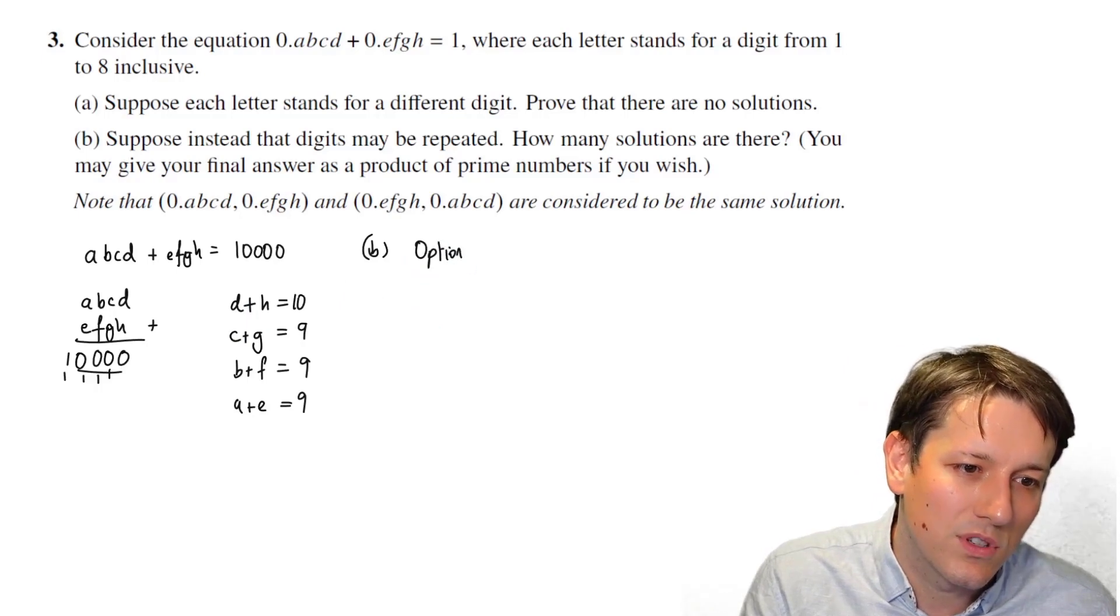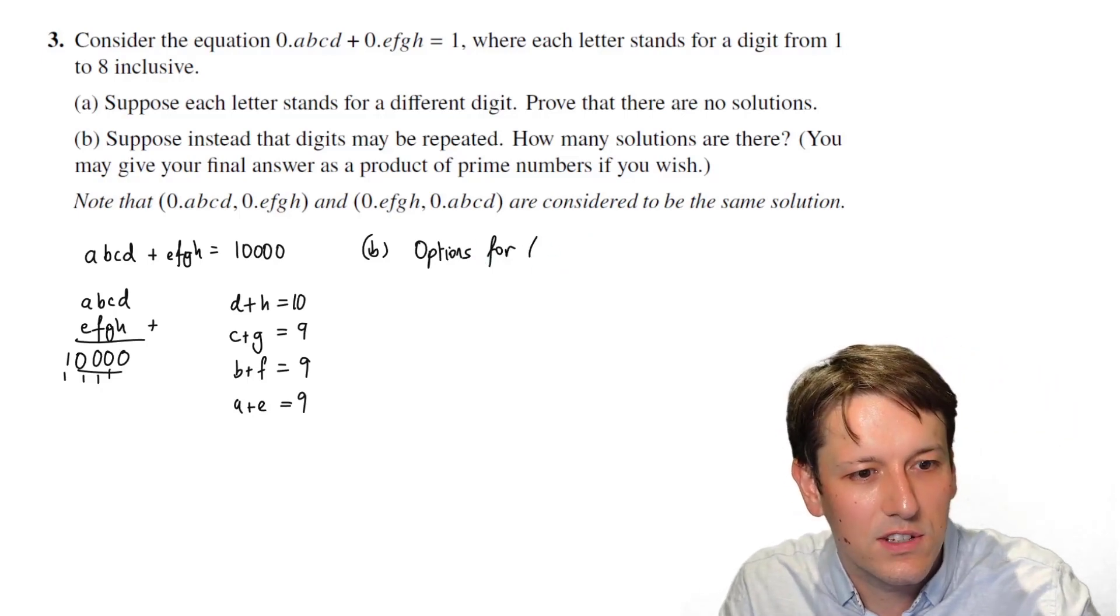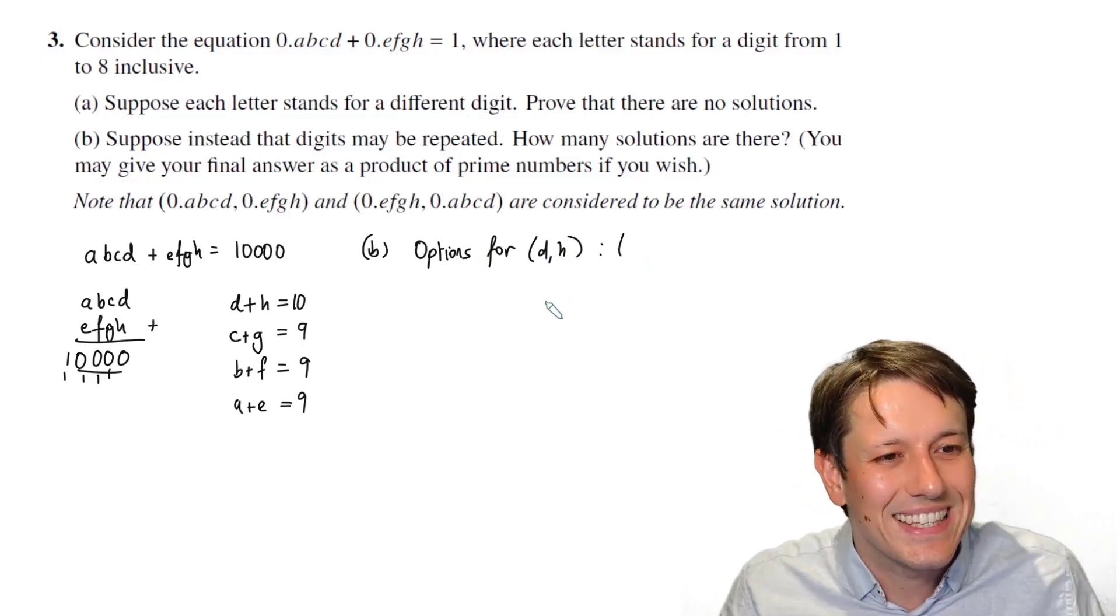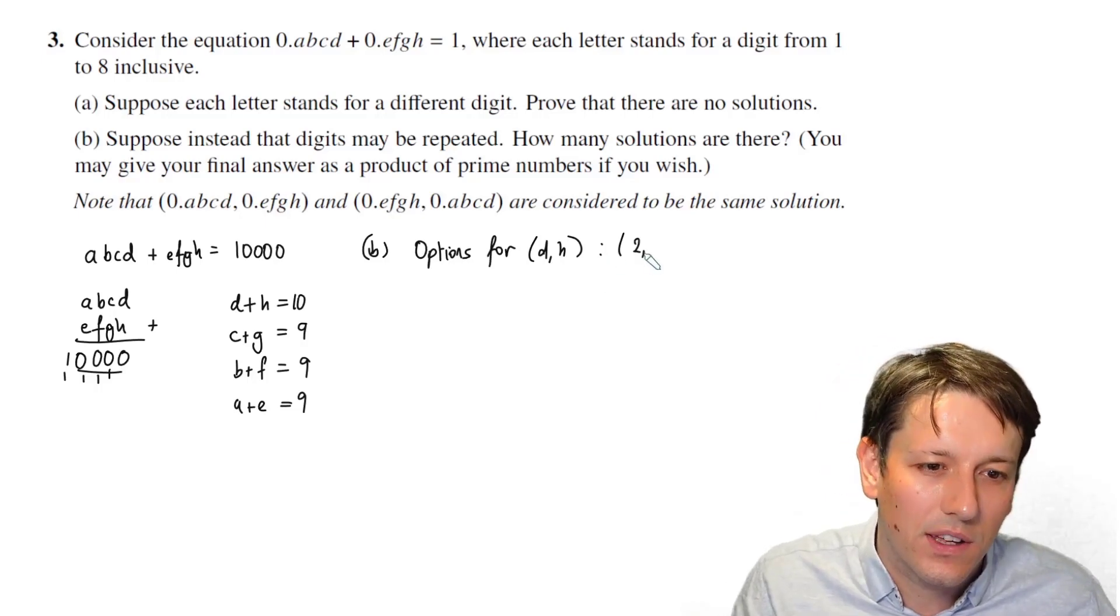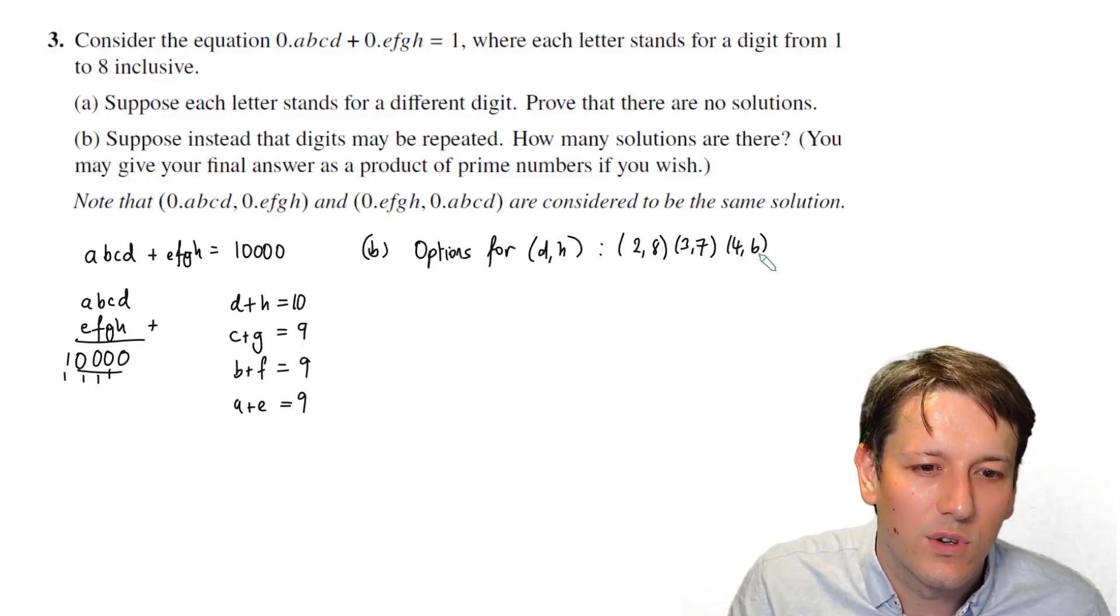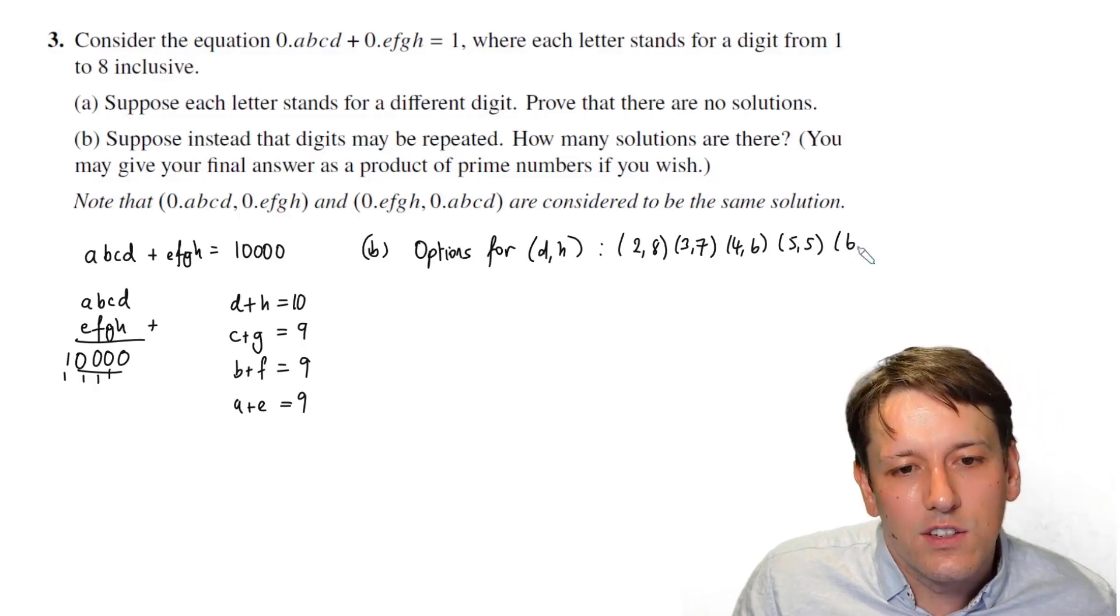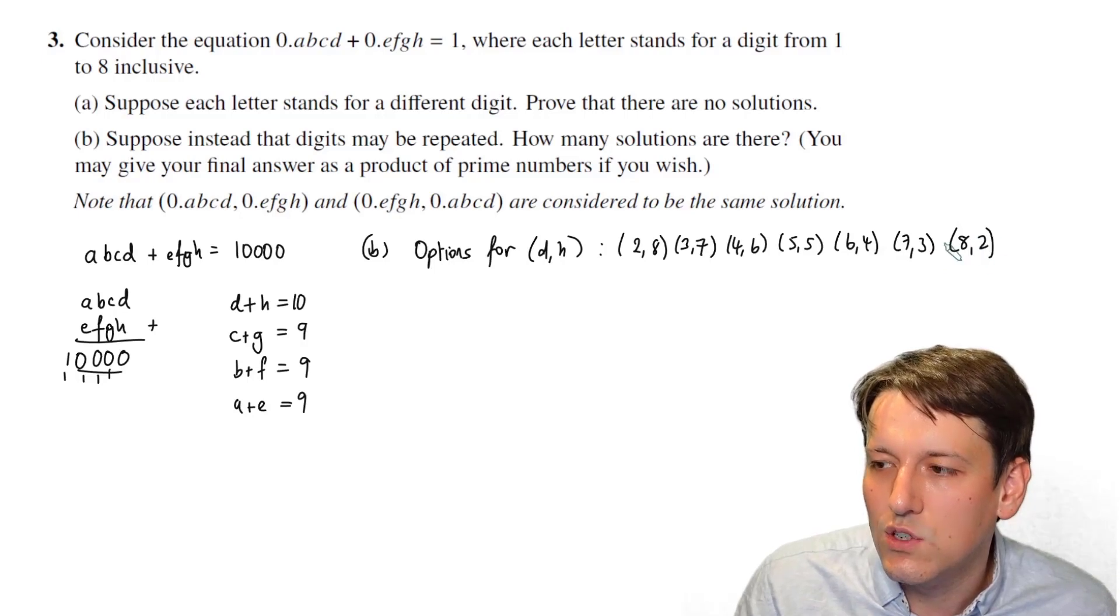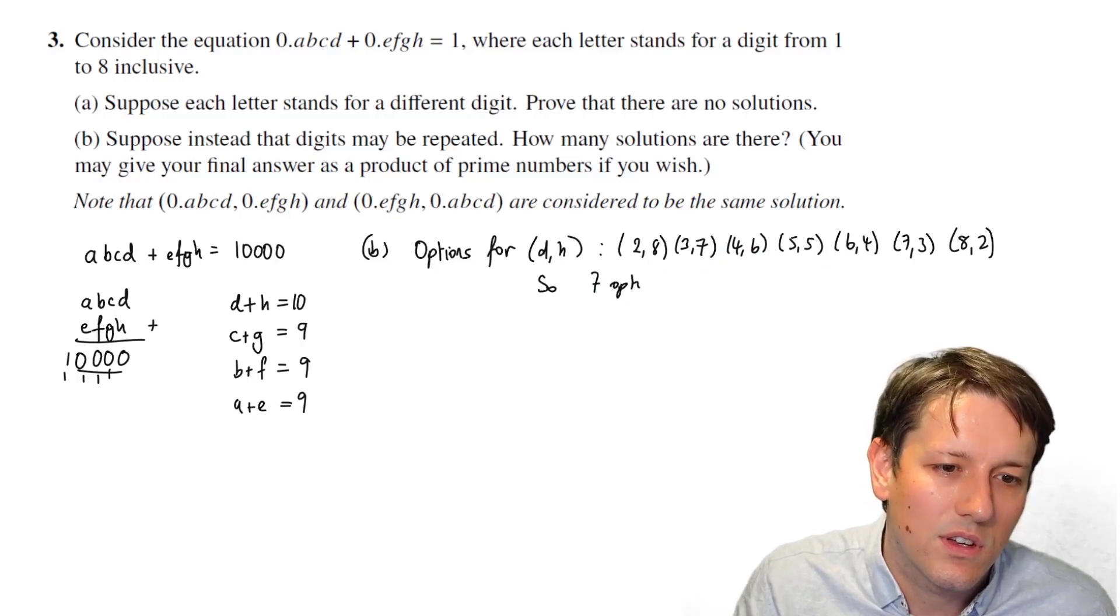And let's think about what options we've got for D and H. And actually, if I could use good notation, I might just say for the pair D, H, and write it like this, and then to get them to add together to give 10. Well, I can't do 1 because I'm not allowed 9, but I can do 2 and 8. I can do 3 and 7. I can do 4 and 6. I can do 5 and 5. I could do 6 and 4. I could do 7 and 3. I could do 8 and 2 that way around. So in total, that's 7 options.